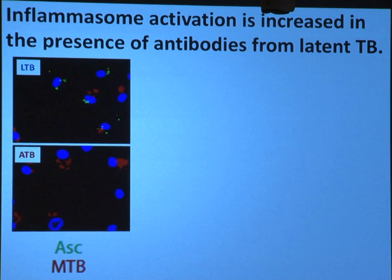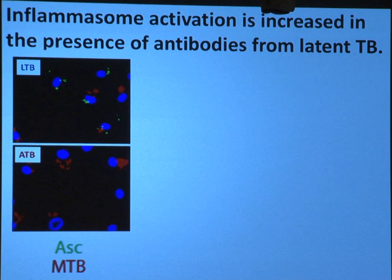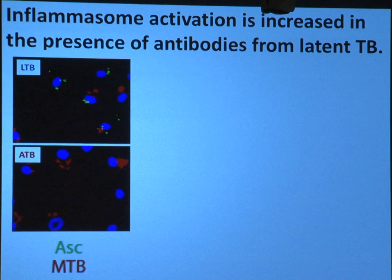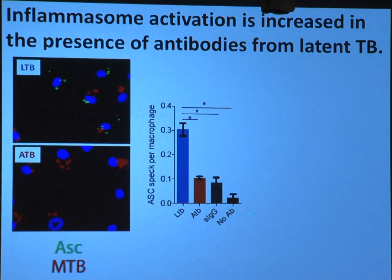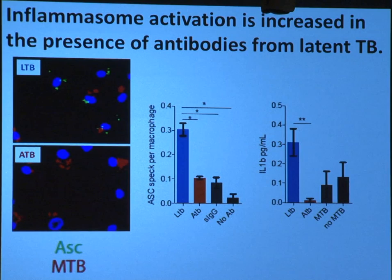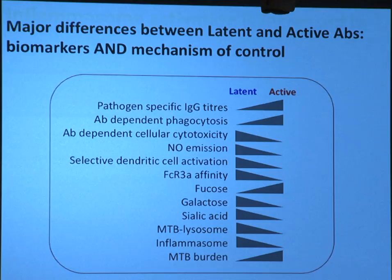We worked to understand the immunological mechanism by which these antibodies induce macrophages to limit bacterial survival. It turns out that these antibodies are arming the inflammasome. When we add latent antibodies to primary macrophages infected with tuberculosis, they induce these really interesting inflammasome specs — these ASC specs — which we do not see in the presence of active antibodies. Quantifying on a single macrophage level the number of ASC specs, we see incredibly high induction of inflammasome activity with the latent antibodies, not with the actives. We validated this with the induction of cytokines associated with inflammasome activity. So these antibodies are arming antimicrobial responses in the macrophages that are containing the bacteria.